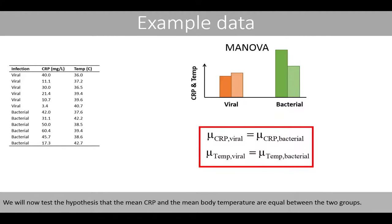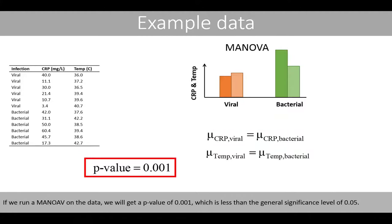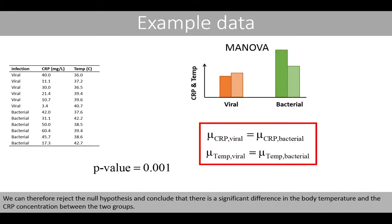We'll now test the hypothesis that the mean CRP and the mean body temperature are equal between the two groups. If we run a MANOVA on the data, we get a p-value of 0.001, which is less than the general significance level of 0.05. We can therefore reject the null hypothesis and conclude that there is a significant difference in the mean body temperature and CRP concentration between the two groups.